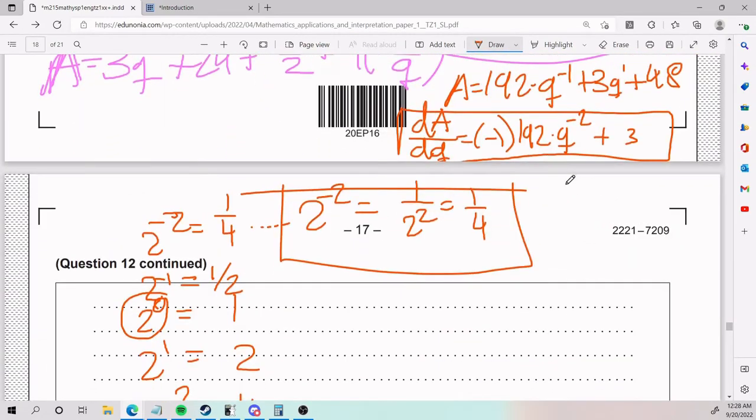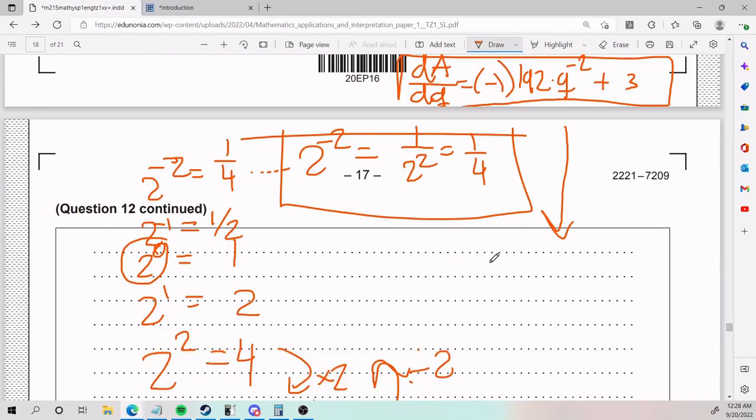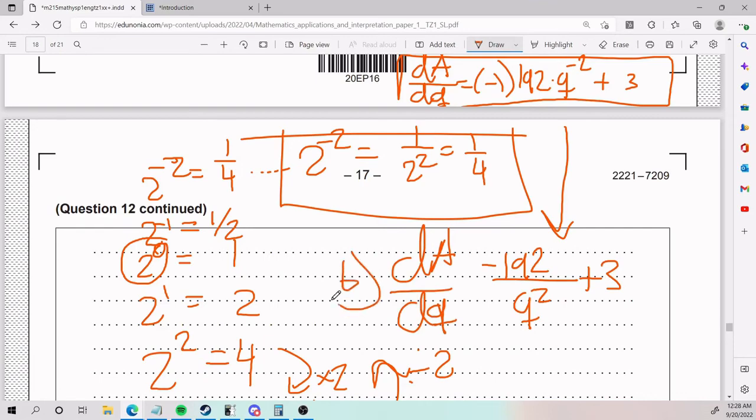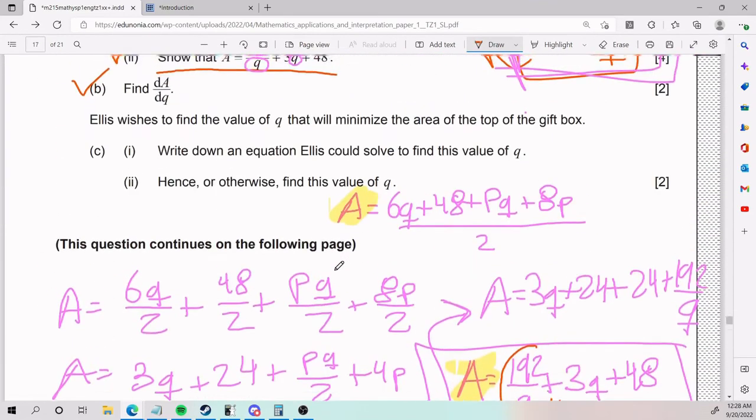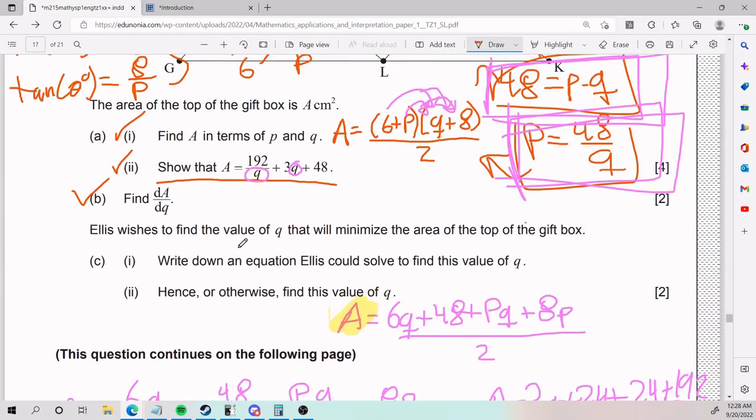Anyways, that is the answer for part B. If you want to leave it super fancy, it would be like this. You put negative 192. You put the Q back on the bottom. And you do plus 3 over there. That is for part B. Moving on. We have that Ellis wishes to find the value of Q that will minimize the area of the top of the gift box. Write down an equation Ellis could solve to find this value of Q. And hence or otherwise, find this value of Q.